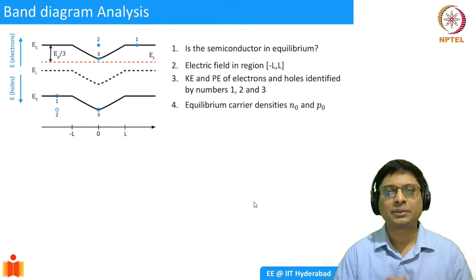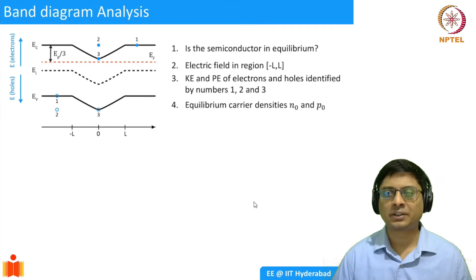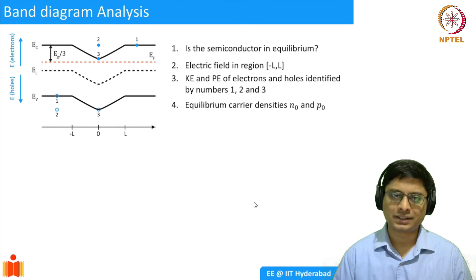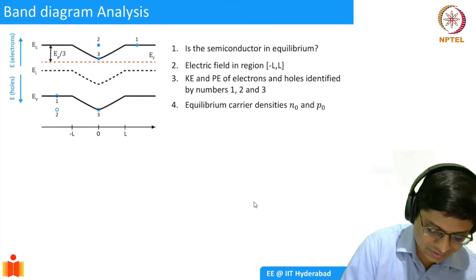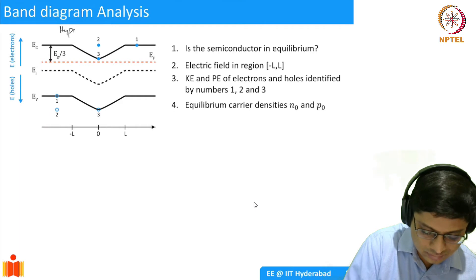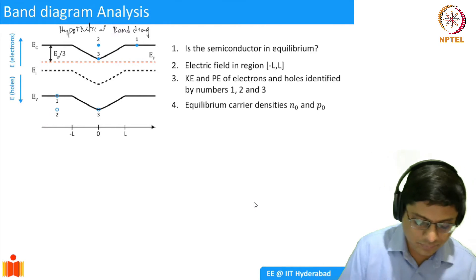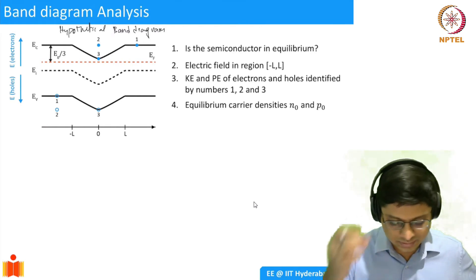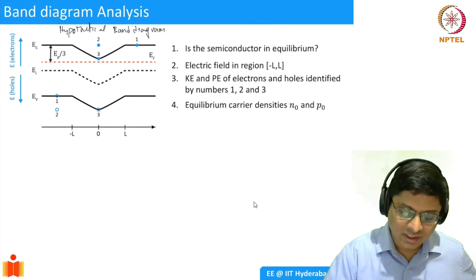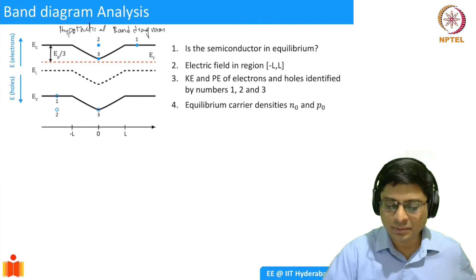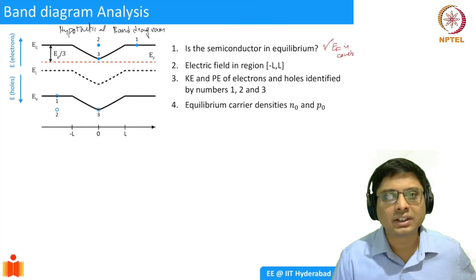Band diagrams are very useful for analyzing how a semiconductor behaves. As a homework problem, consider a hypothetical band diagram from minus L to L, showing E_C, E_V, E_I, and a constant E_F. The first question is: is the semiconductor in equilibrium? It is in equilibrium because E_F is constant.